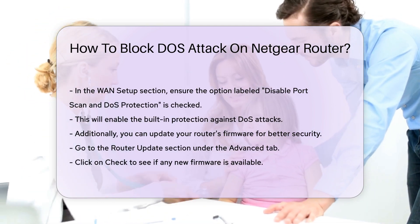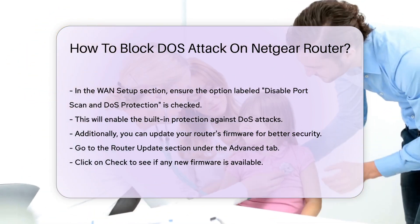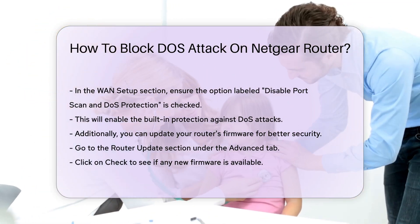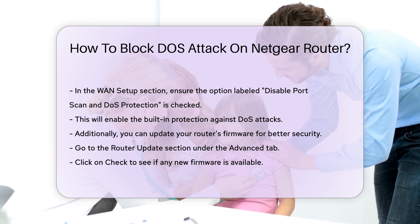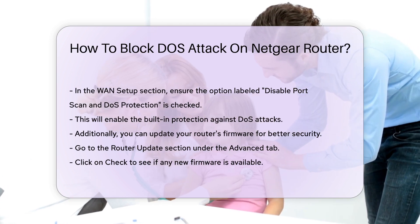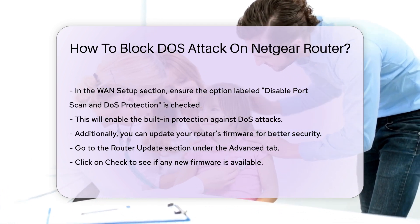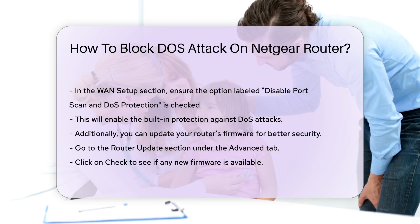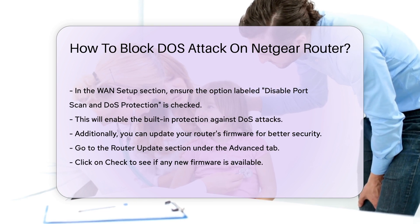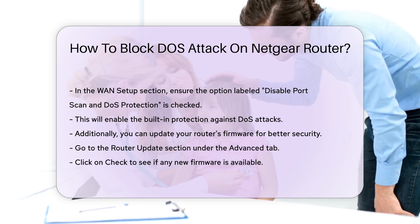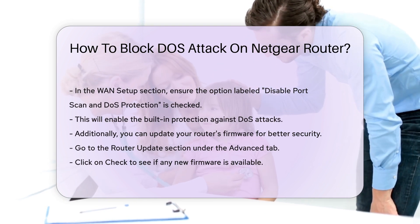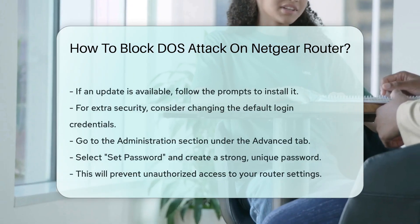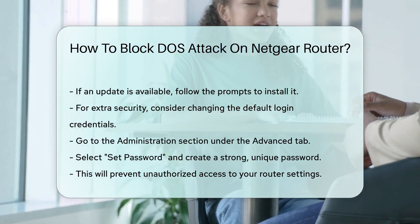Additionally, you can update your router's firmware for better security. Go to the Router Update section under the Advanced tab. Click on Check to see if any new firmware is available. If an update is available, follow the prompts to install it.